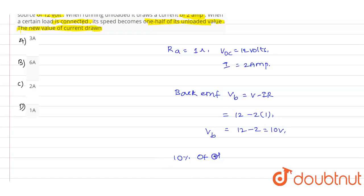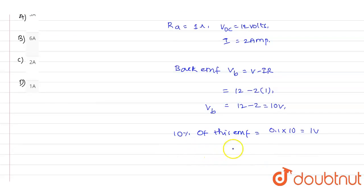10% of this EMF will be 0.1 into 10, which equals 1 volt. Hence, the current value, the new current value I, will be 1 into 1. That will be voltage into resistance value, 1 into 1, which gives us 1 amp as the new current value.